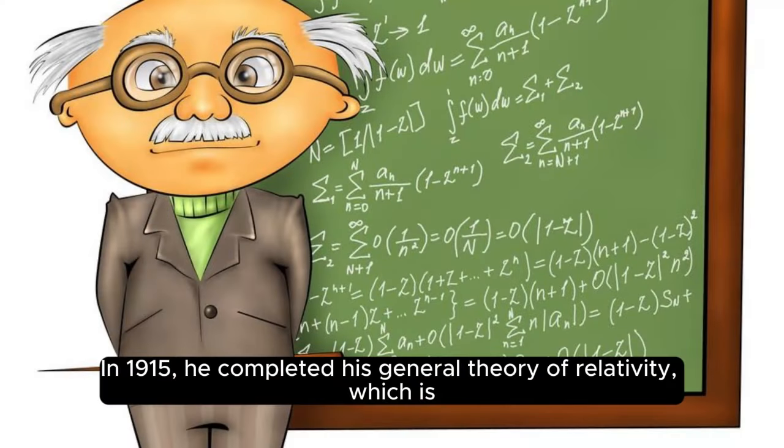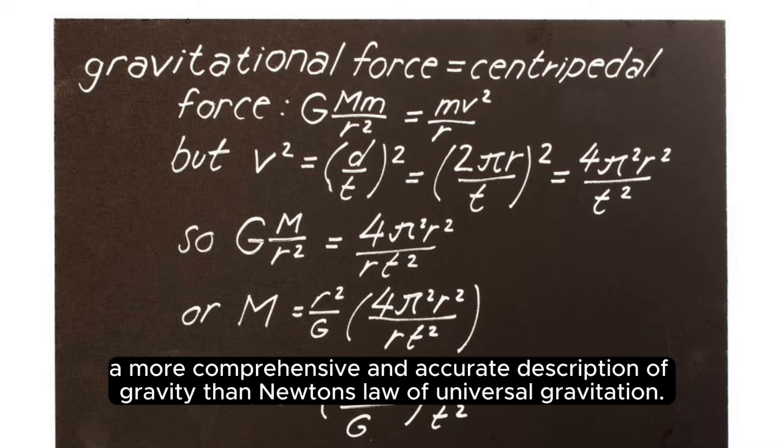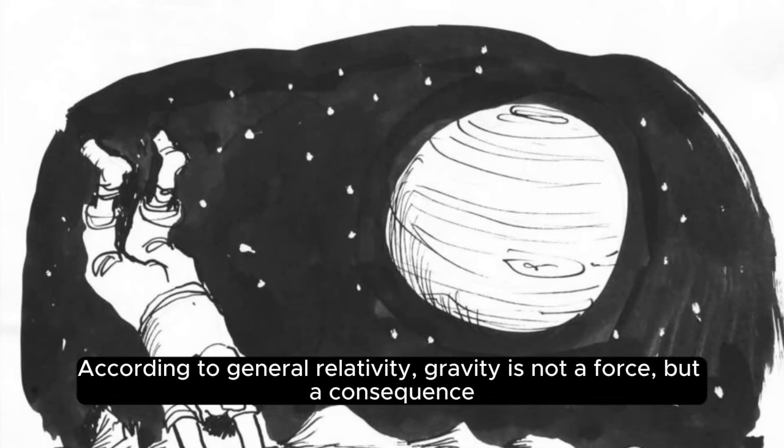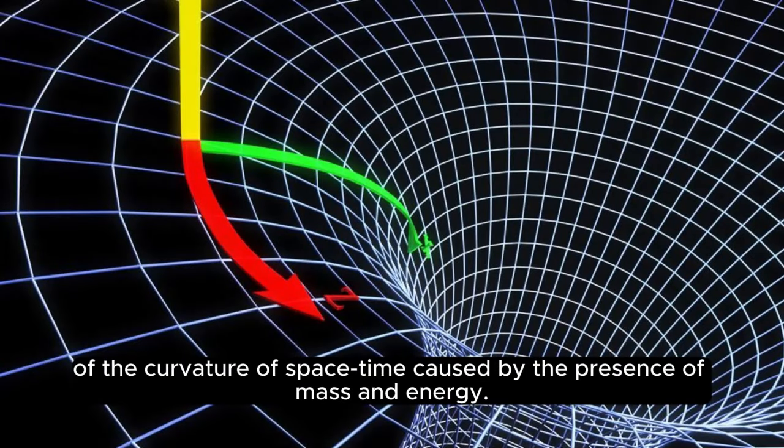In 1915, he completed his general theory of relativity, which is a more comprehensive and accurate description of gravity than Newton's law of universal gravitation. According to general relativity, gravity is not a force, but a consequence of the curvature of space-time caused by the presence of mass and energy.